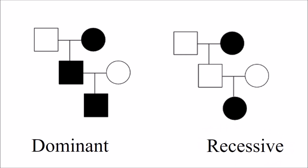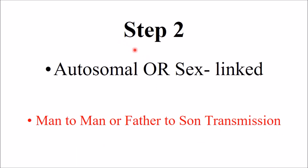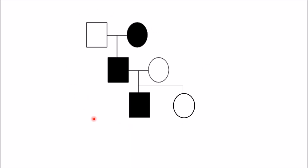Step number two: we have to differentiate between autosomal and sex-linked inheritance. For this, we look for male-to-male transmission, also known as father-to-son transmission. In this pedigree, both females and males are affected, and in the second generation we can see a father transmitting the trait to his son. This type of pattern is seen in autosomal inheritance.